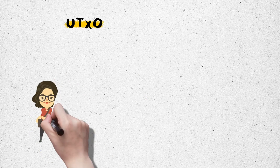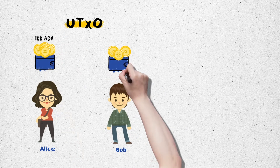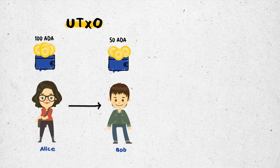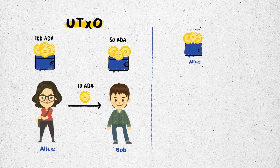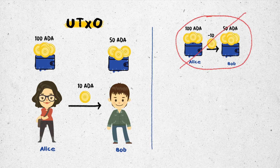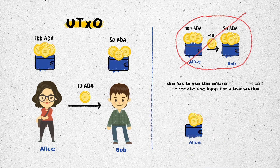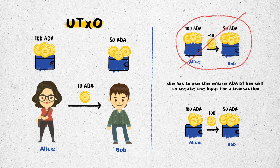Assuming we have a transaction between Alice and Bob. Alice's wallet has 100 ADA, Bob's has 50 ADA. As Alice wants to send 10 ADA to Bob, she creates a transaction. Because according to the basic rule of UTXO — complete consumption — Alice cannot divide her available ADA into 90 and 10. Therefore, she has to use the entire ADA to create the input for a transaction.